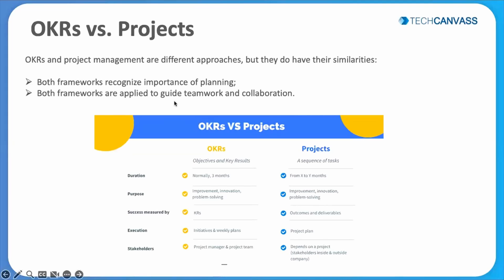So what is the difference between an objective and a project? We can very well call an OKR a project, right? Because most of the features are of what exactly is a project. But OKR and project management are different approaches altogether.